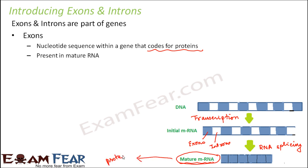The process where RNA is used for synthesizing proteins is known as translation. At the end of transcription, initial RNA is produced which has both exons and introns. Then introns are removed from that RNA and mature RNA is produced, which is further used for the process of translation.